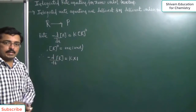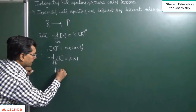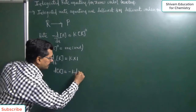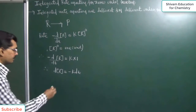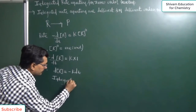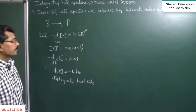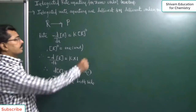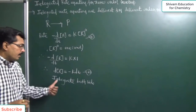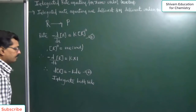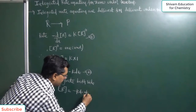Further simplifying, taking the negative side to the opposite side, dt goes to the other side, so I get d[R] equal to minus k dt. Now taking integration on both sides — integrate both sides — on integration I get the equation [R] equal to minus kt plus I.